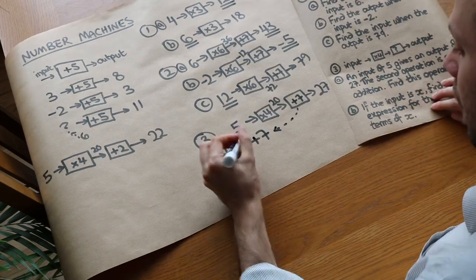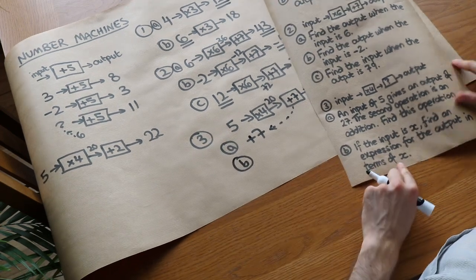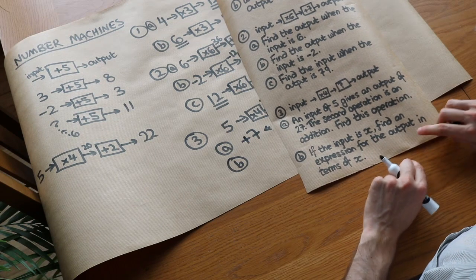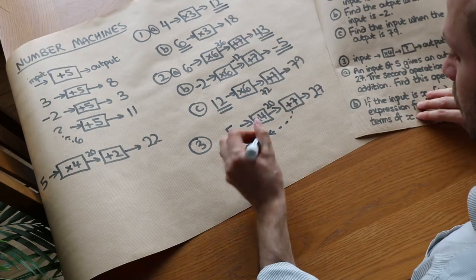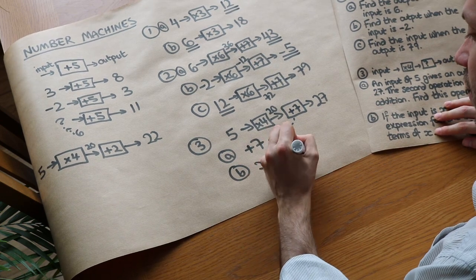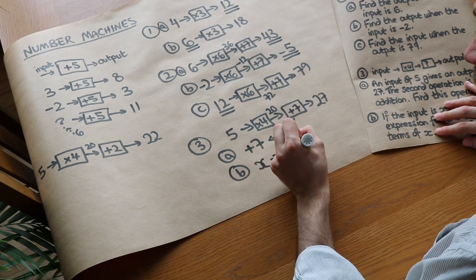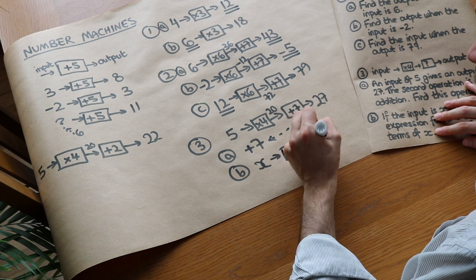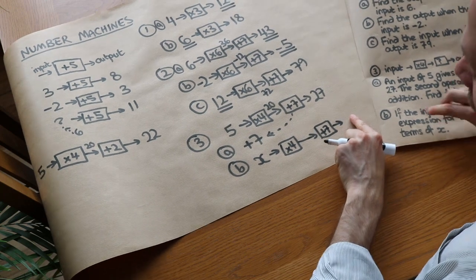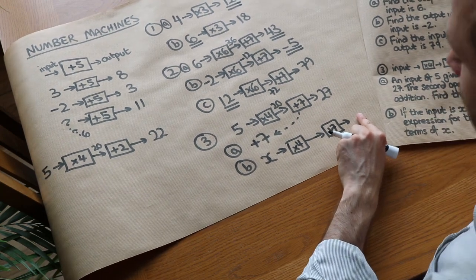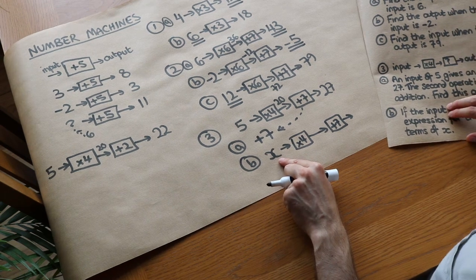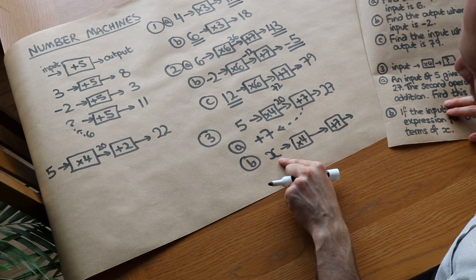And then finally, if the input is x, find an expression for the output in terms of x. So this time we've got an input of x, it's going through these two number machines, times by 4 and then it's going through plus 7, and we've got to find an expression for the output in terms of x. Now this one's a bit harder because instead of a number as an input, we've actually got a variable.